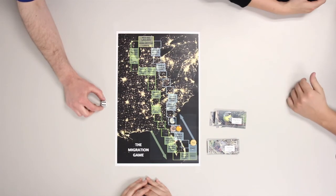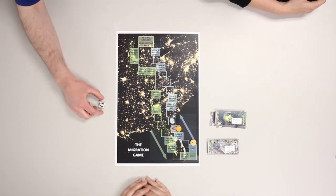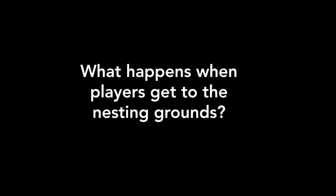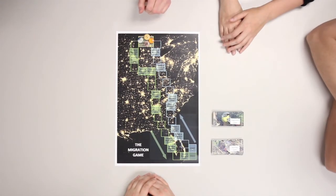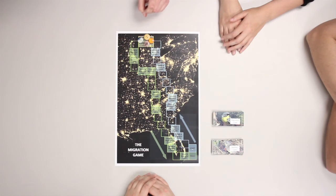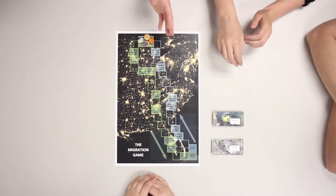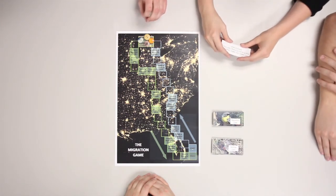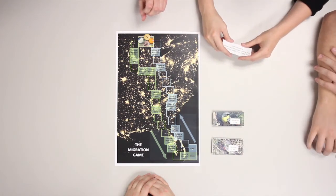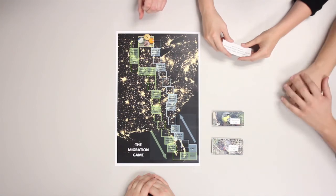Players continue in this fashion until they arrive in the nesting grounds. Even if a player rolls high enough to move directly past the nesting area, they still must wait in the nesting area for 4 turns. At the beginning of each turn, a player draws a nesting card. For example, player 1 draws a nesting card that reads: 'Too many city lights. Hard to find 8 acres of young jack pine forest to nest.'